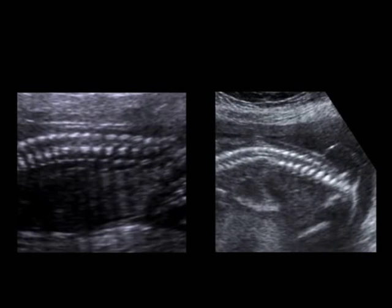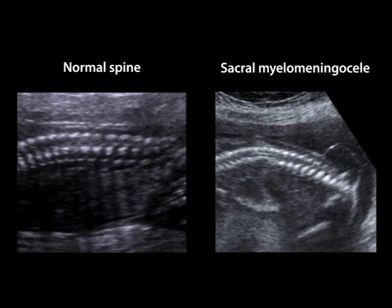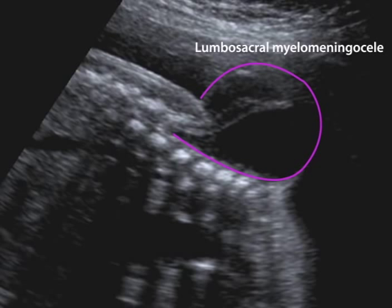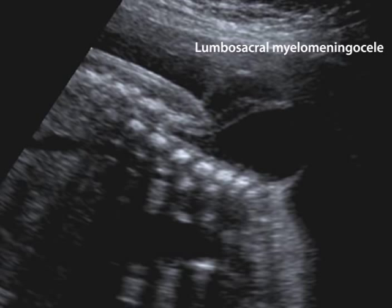The sagittal image on the left depicts a normal fetal spine. In contrast, the image on the right demonstrates a myelomeningocele, with a prominent meningeal sac protruding from the dorsum of the sacral spine. In this sagittal image of a 26-week fetus, a prominent myelomeningocele is seen. A herniated sac protrudes from the lumbosacral spine, and nerve roots are clearly visible. The overlying skin is seen cephalad to the spinal defect but abruptly stops at the defect.